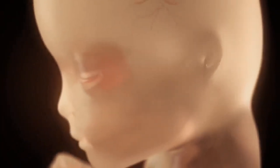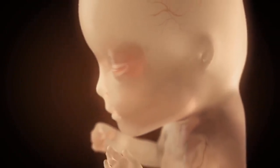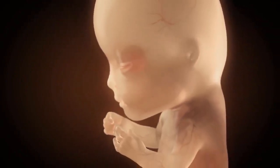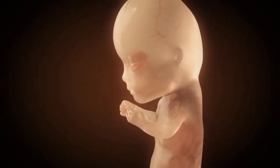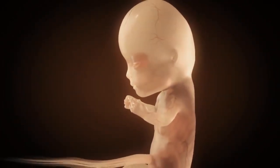Embryogenesis turns into fetogenesis in the 9th week, and in the 3rd month, that is, from the 12th week on, the fetus already has a human-like appearance. The eyelids are closed, the skin is translucent.